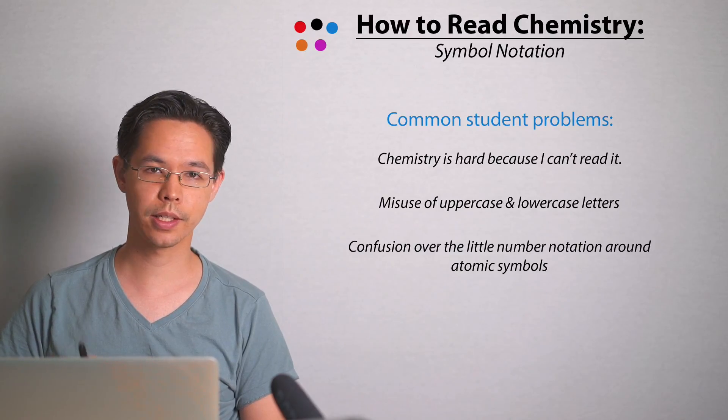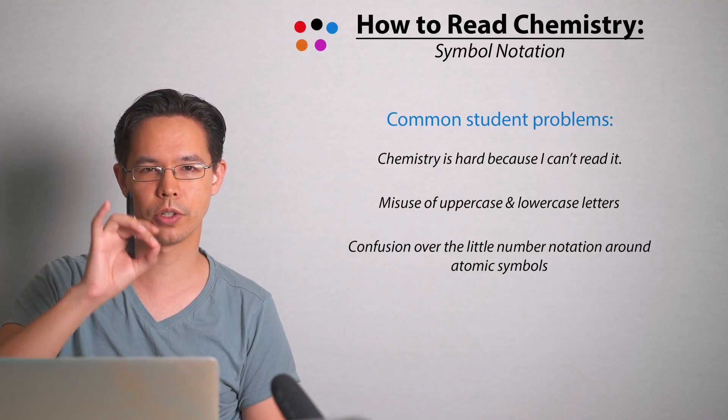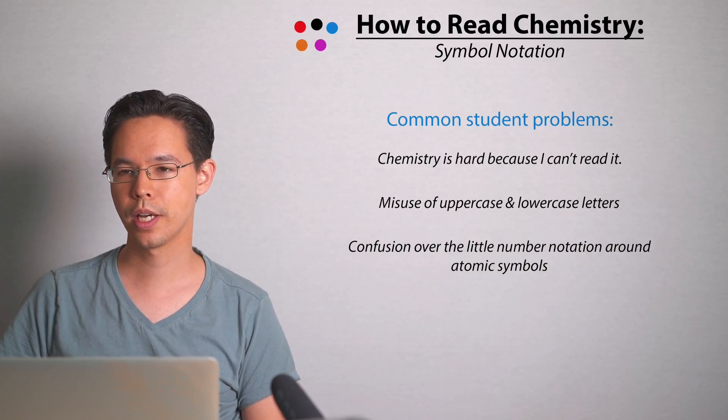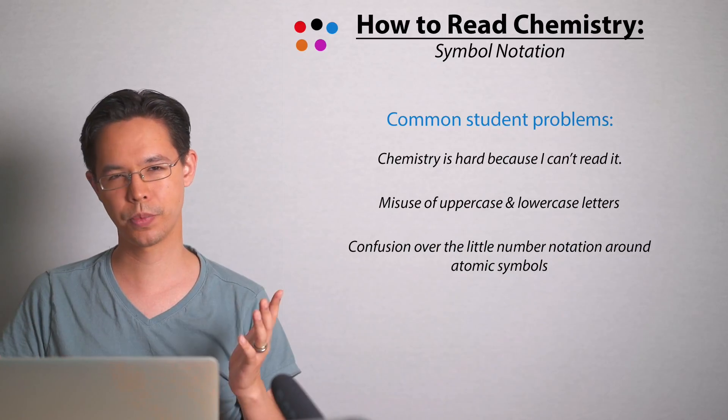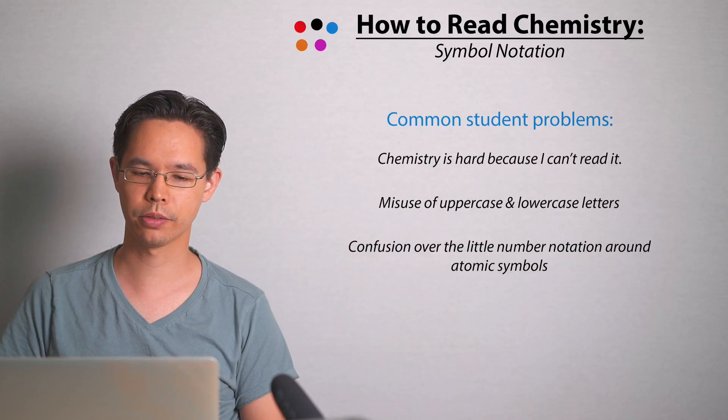The most confusing part of chemistry is those little numbers, and you can find them in different corners of the letters and what do they mean. Some kids tend to get them mixed up back to front and we're just going to straighten that information out.